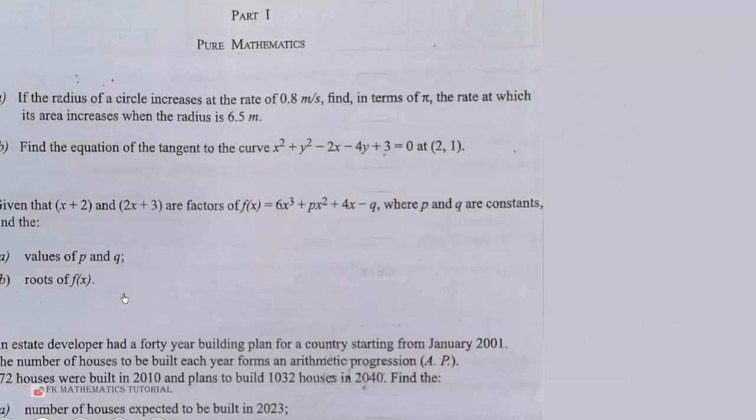Now let's look at question number 11. An estate developer had a 40 year building plan for a country starting from January 2001. The number of houses to be built each year forms an arithmetic progression. 372 houses were built in 2010 and plans to build 1032 houses in 2040. Find the number of houses expected to be built in 2023. So this is an AP. We need to find a and d, which is the first term and the common difference.